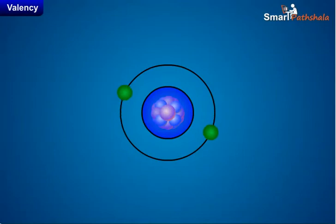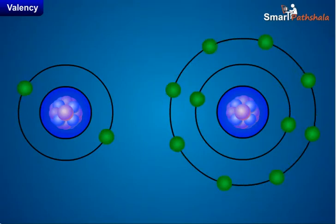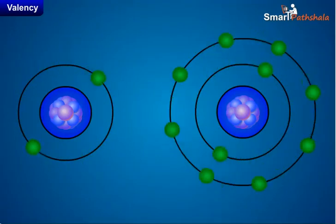For example, the helium atom has 2 electrons in its outermost shell, and all other elements have atoms with 8 electrons in the outermost shell.